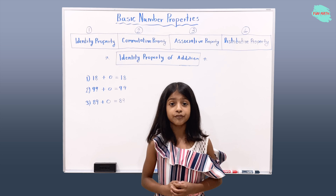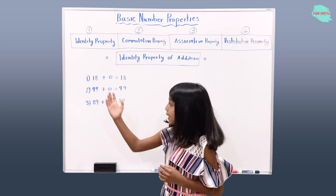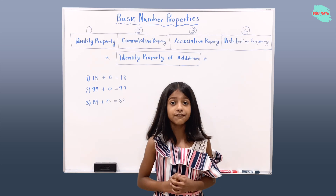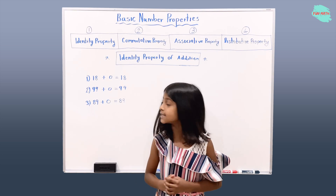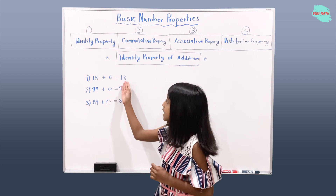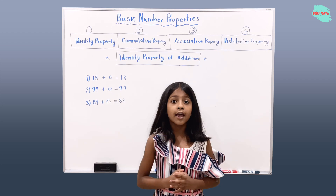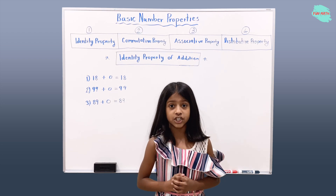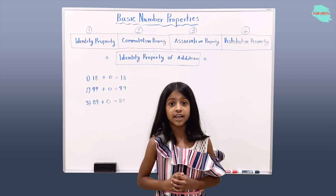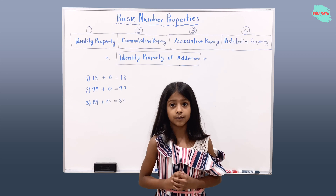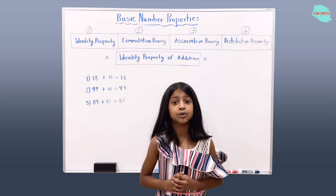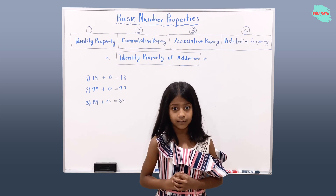Here I have three examples that we're going to solve today. The first example is 18 plus zero equals 18. 18's identity is not changing after they add zero. It still gives us 18, the same number you added with zero.